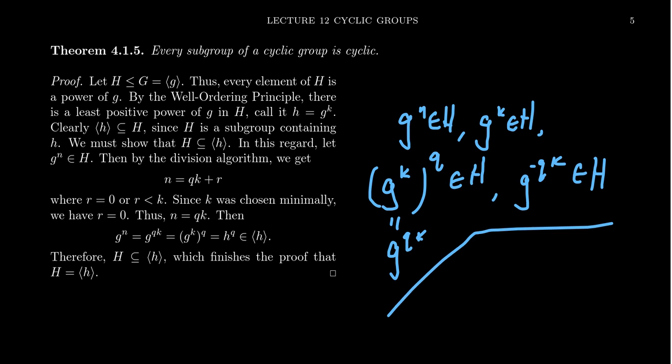And so then here's the main kicker. We're going to get that g to the n times g to the negative qk, which when you combine those exponents together, you're going to get g to the r. This is an element of H.